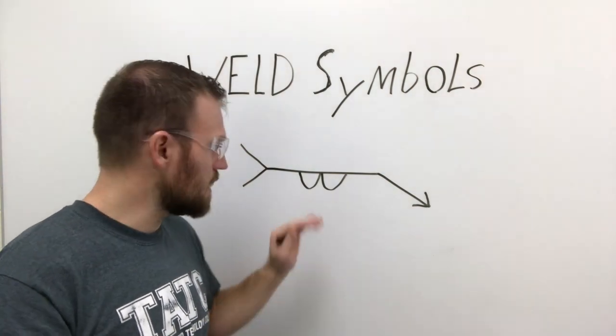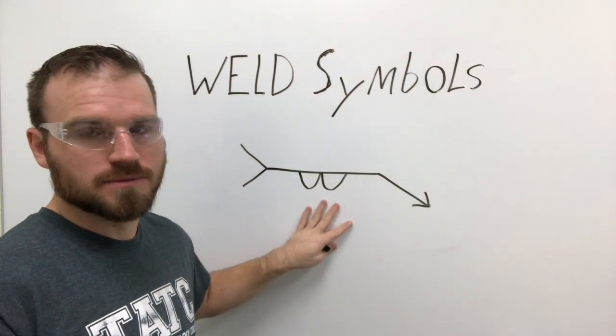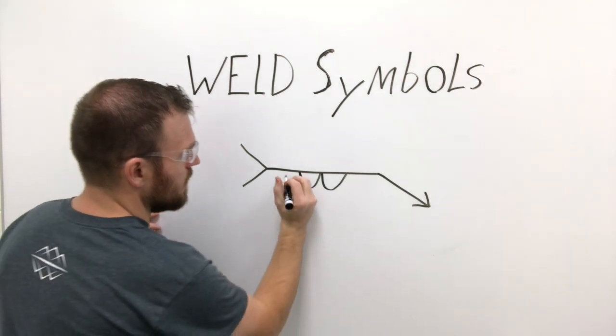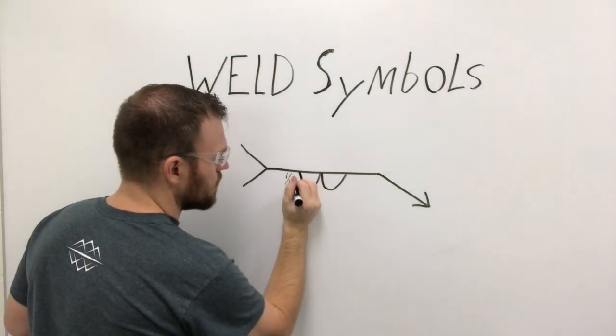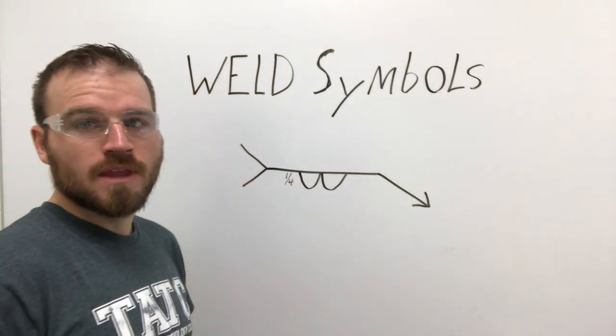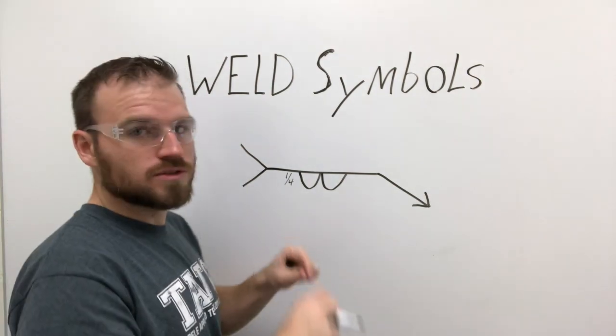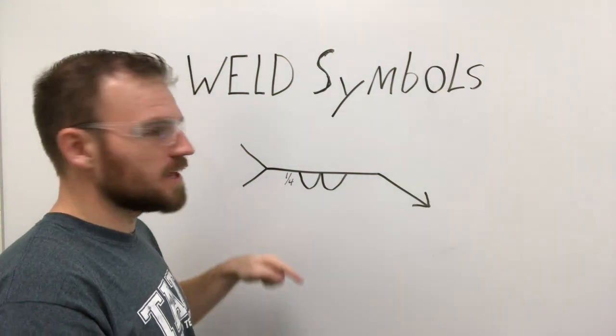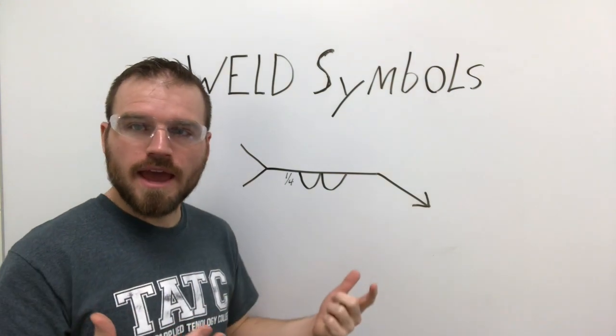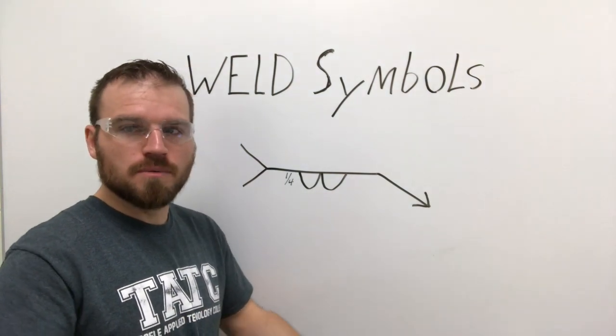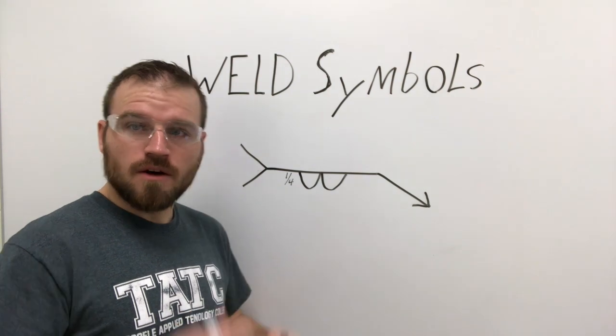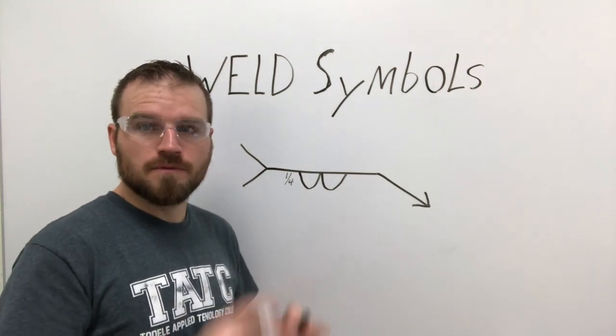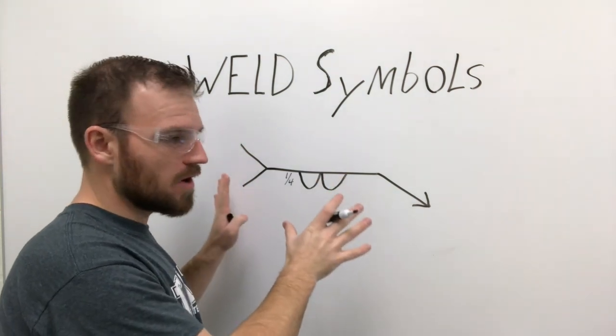Now if you've seen in my notes, there are some that have like a one-fourth or something over to the side. This is indicating how tall that weld needs to be. Typically, if it is something that is like a quarter of an inch or three-eighths, you're actually going to have to do multiple beads to build it up.